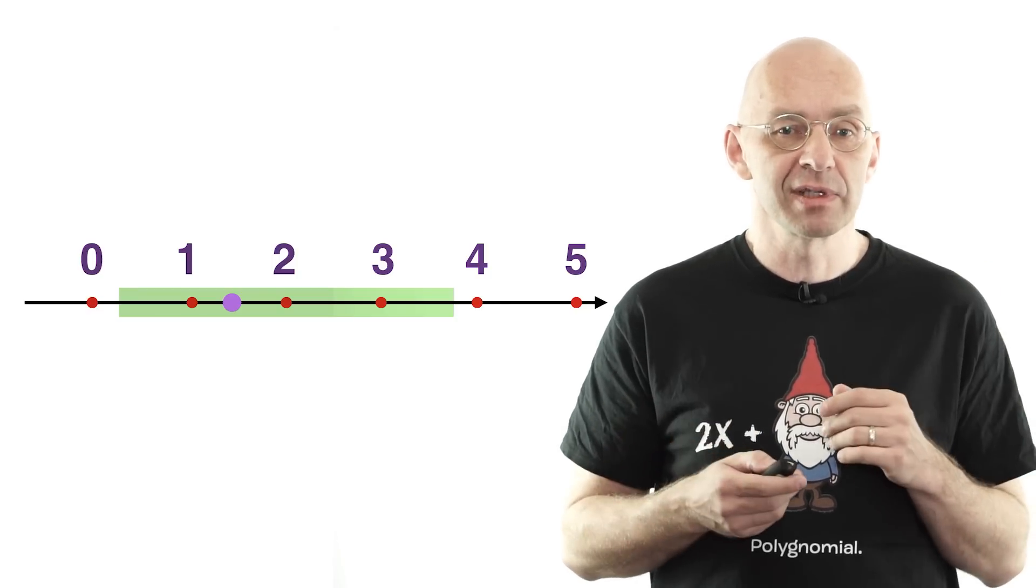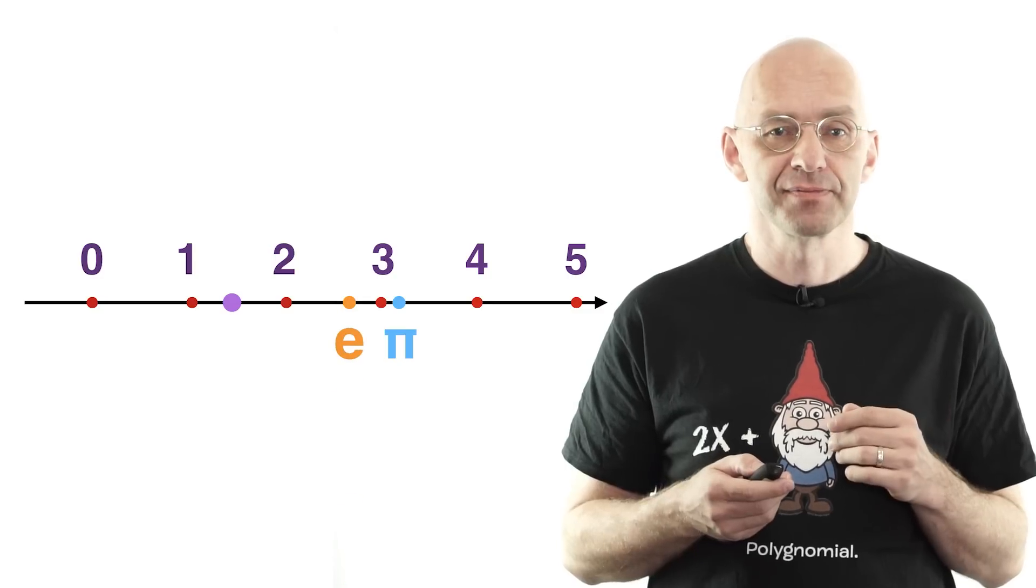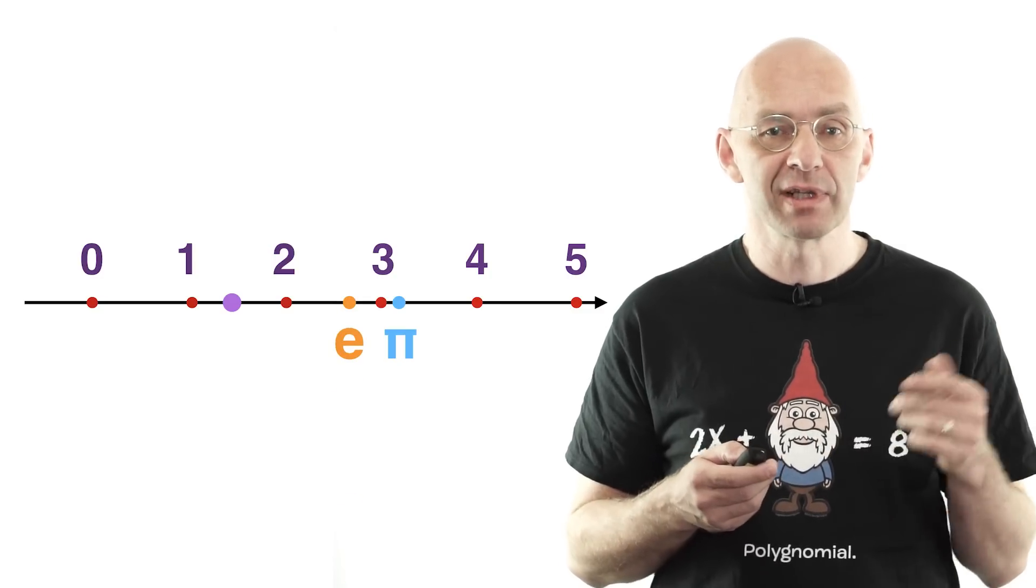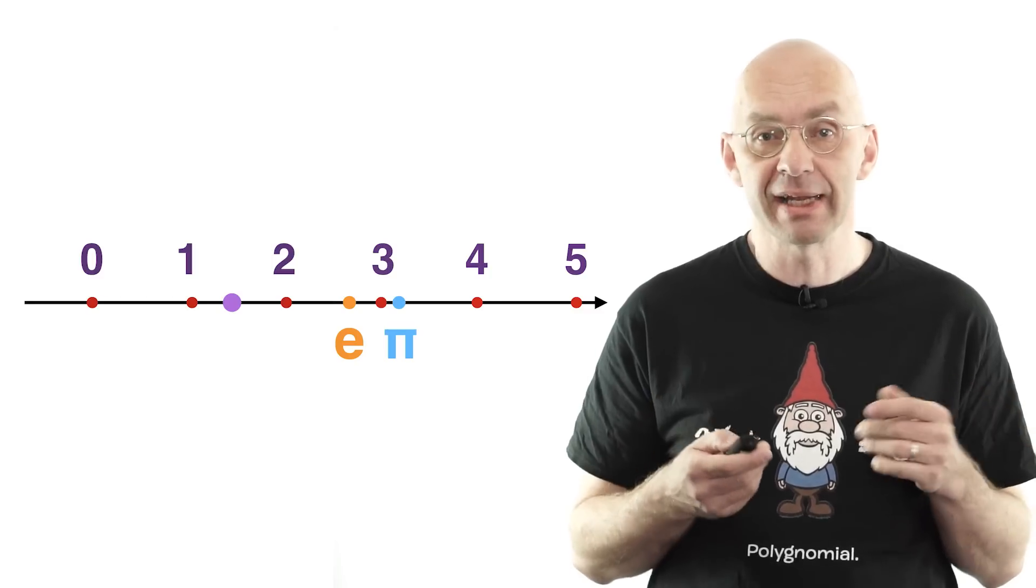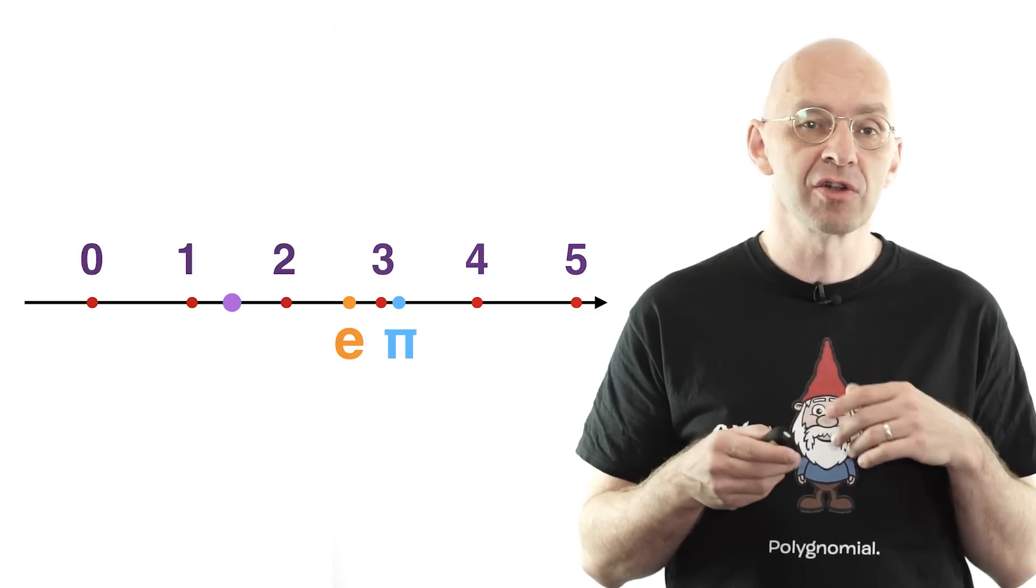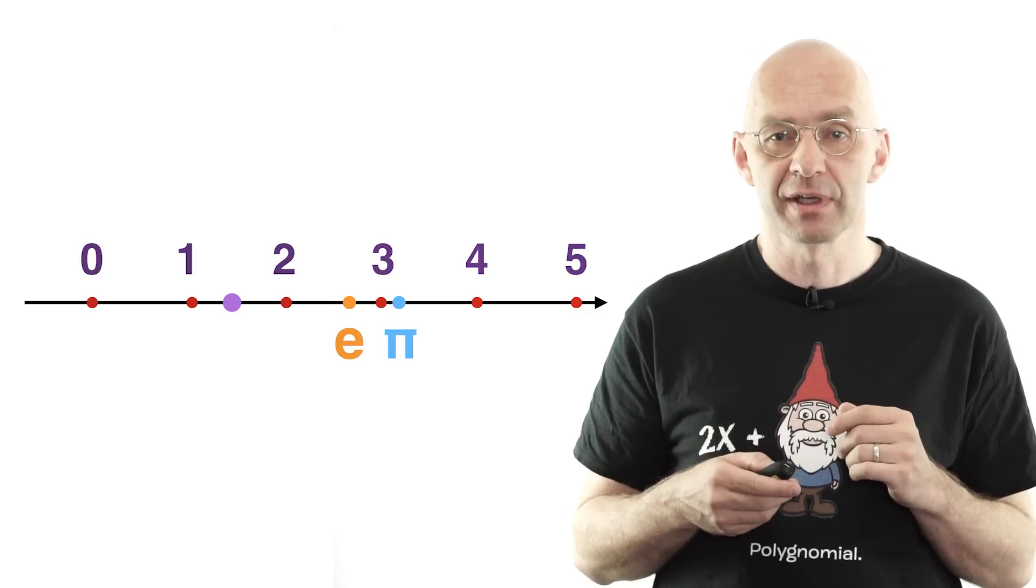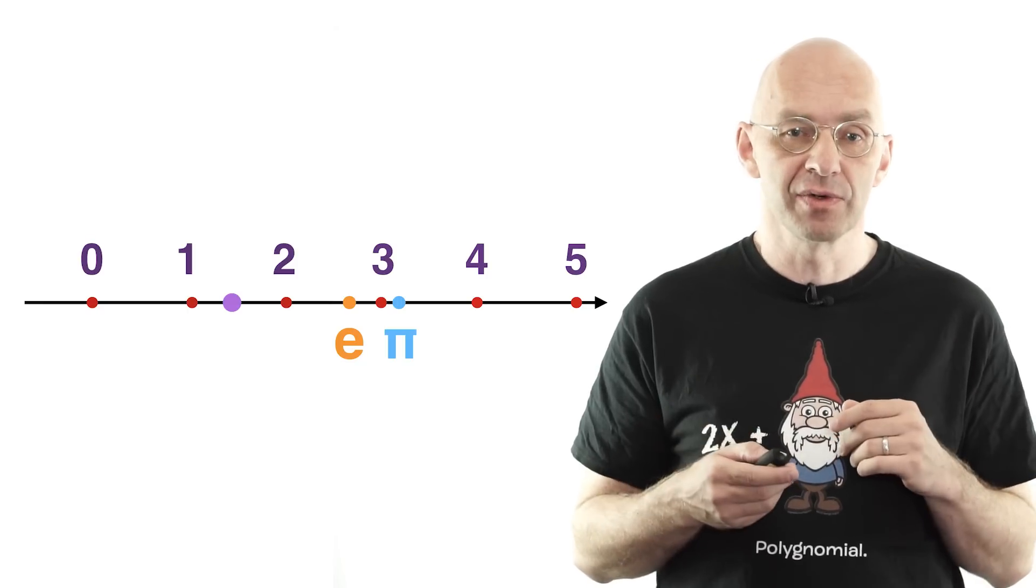So what about numbers like pi or e? Well, since almost all numbers are transcendental, you'd expect both pi and e to be transcendental. And that's actually true, but it turns out to be super tough to prove this and is really beyond what I can do in a video like this.